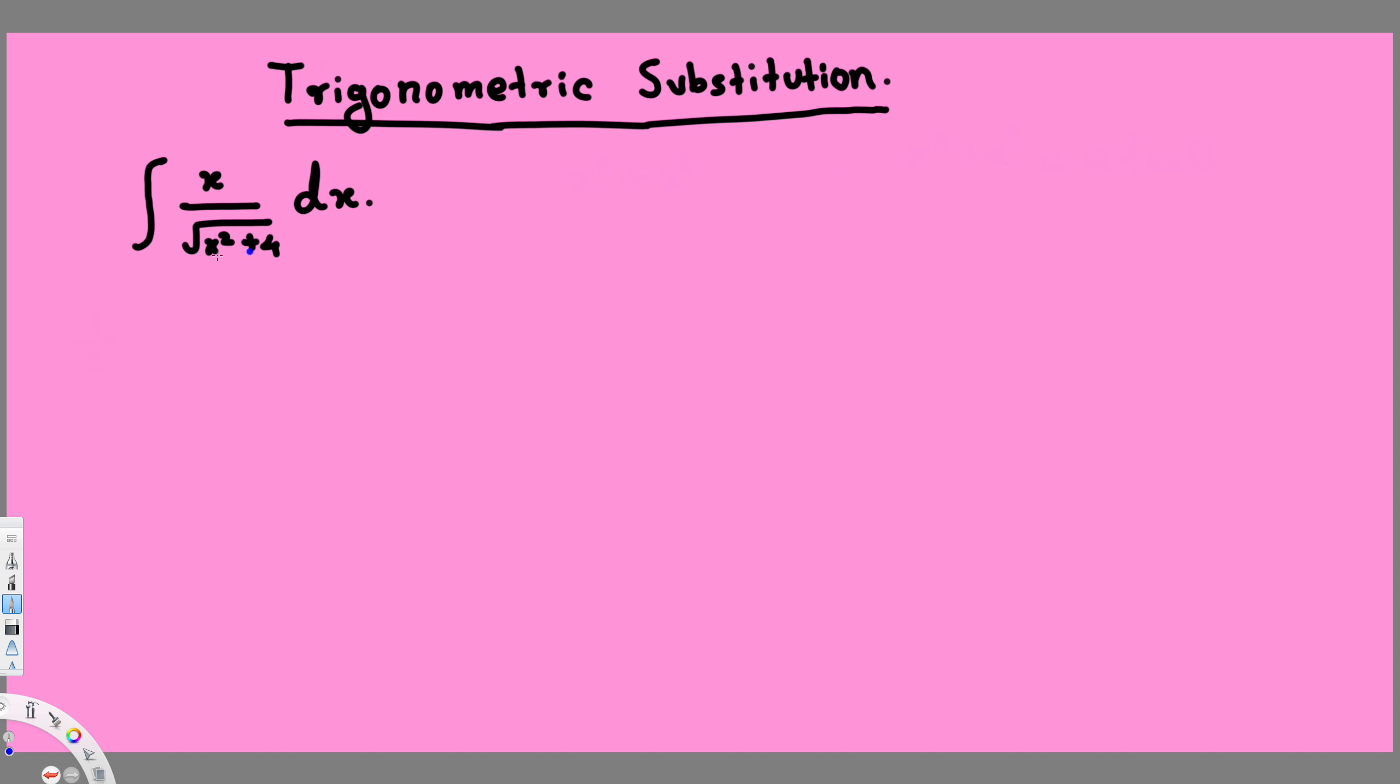So whenever we have x squared plus a number squared, we use this formula. We use x as a tan theta and we do the trigonometric substitution. But here we don't have to do this.